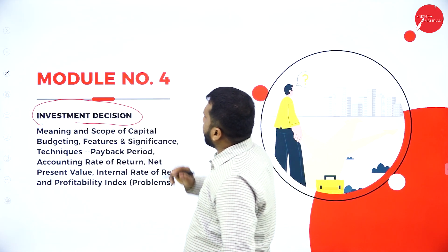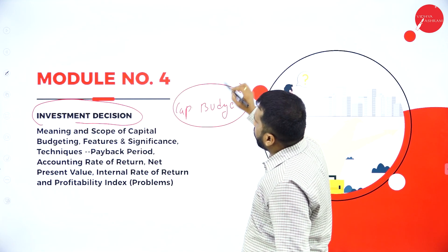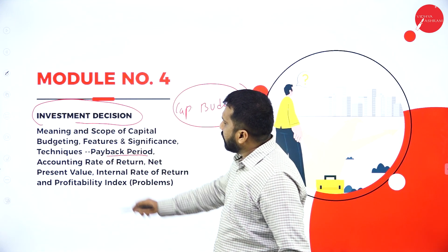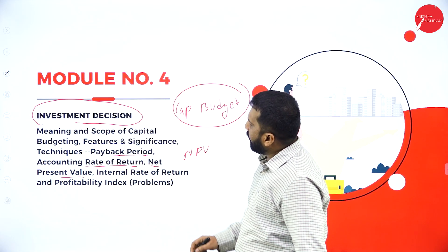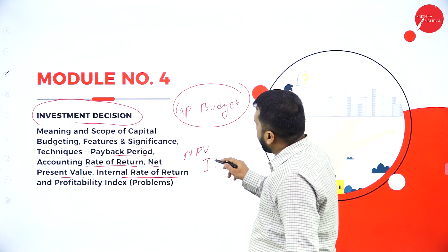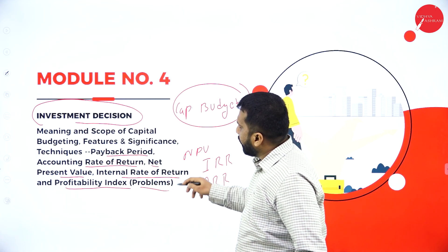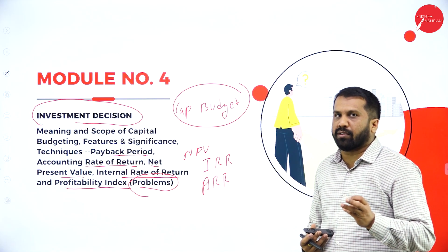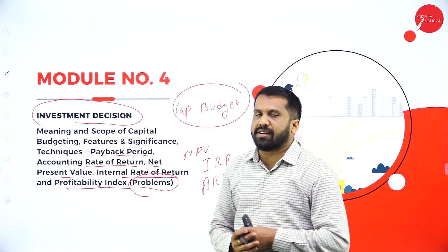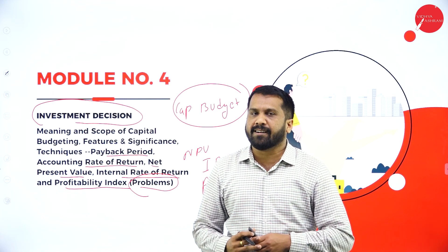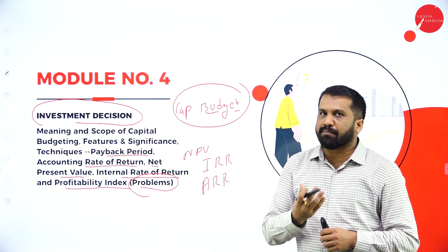Unit four is investment decision, also called capital budgeting. Under capital budgeting, the topics are: payback period, ARR (Accounting Rate of Return), NPV (Net Present Value), IRR (Internal Rate of Return), and Profitability Index. You will get numerical problems on NPV, Profitability Index, payback period, and accounting rate of return. Capital budgeting means forecasting and planning for the future.